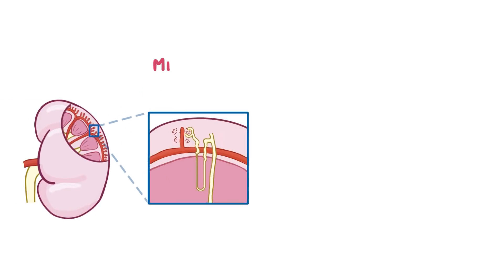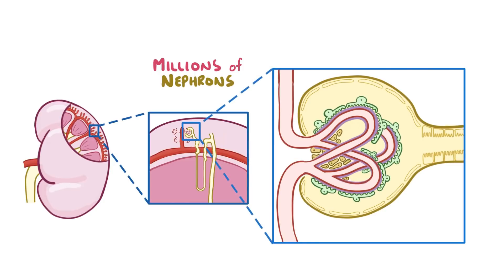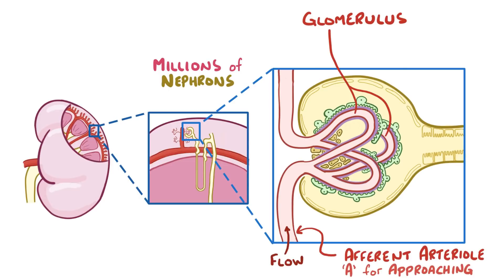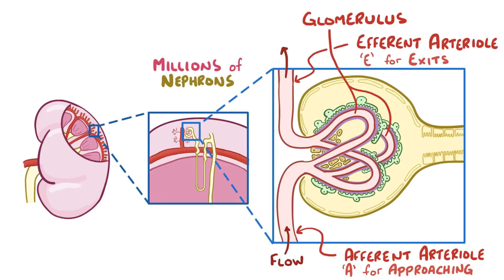Each kidney has millions of nephrons, each of which is served by a tiny capillary bed called a glomerulus. The tiny arteriole that approaches the glomerulus is called the afferent arteriole — A for approaching — and the arteriole that exits the glomerulus is called the efferent arteriole — E for exits.